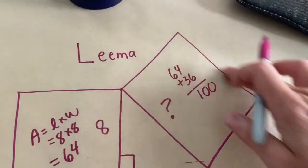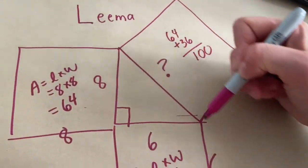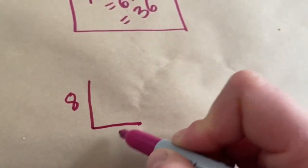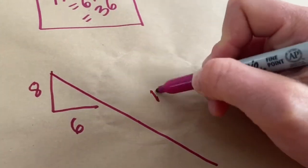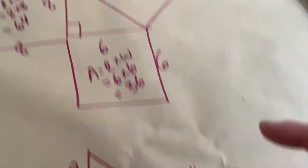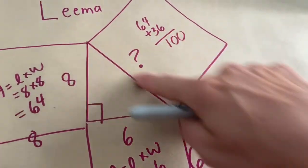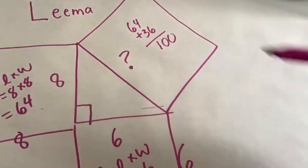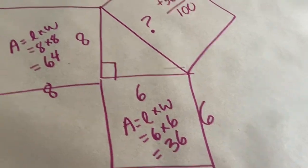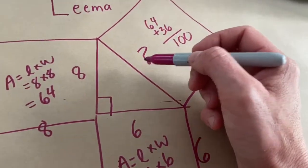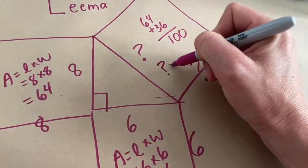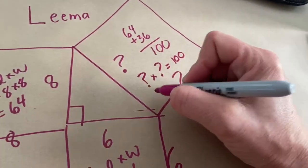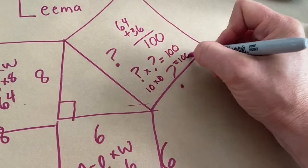It doesn't mean that this side is 100 — that wouldn't make sense. You can't draw a triangle that goes 8, 6, and this side is 100. So we need to figure out what this side is. To do that, you need to think about what number times what number gives you 100. Six times six gives you 36, eight times eight gives you 64 — so what number times what number gives you 100? Some of you know right away: that must be 10, because 10 times 10 equals 100. This side must be 10.